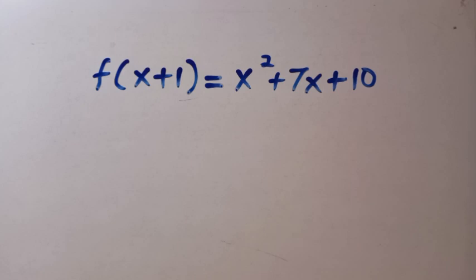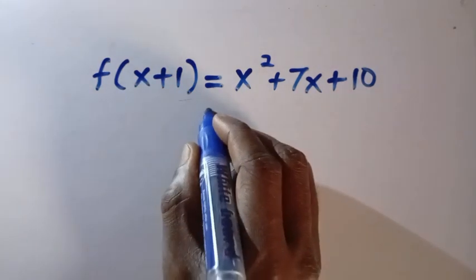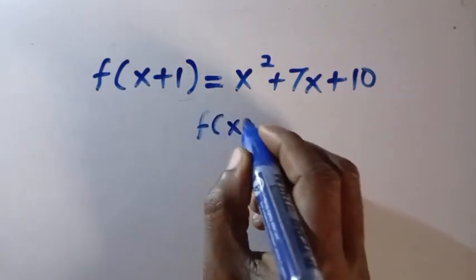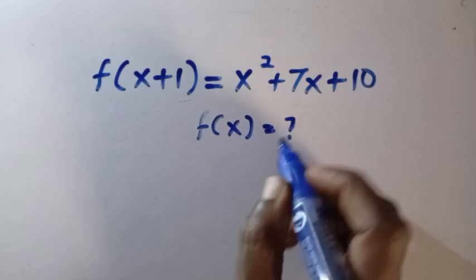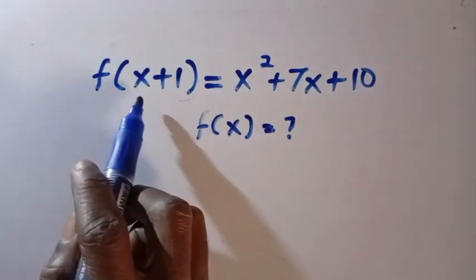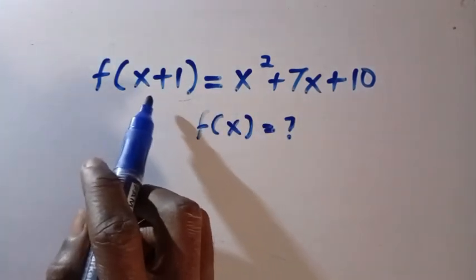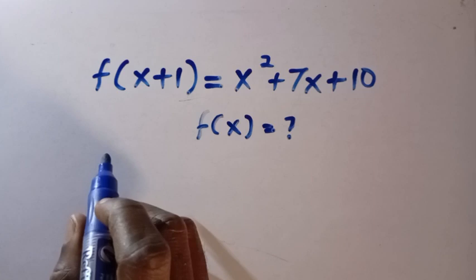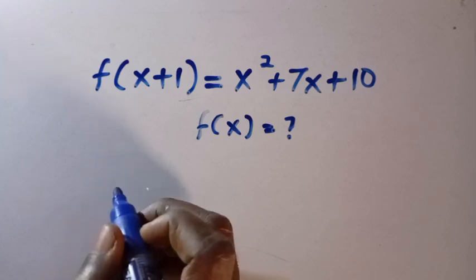We have f of x plus 1 equals x squared plus 7x plus 10. So what we do here is we want to find f of x, but from this domain we have x plus 1. So this is very easy to solve as I'm going to be presenting two different methods to solve this.